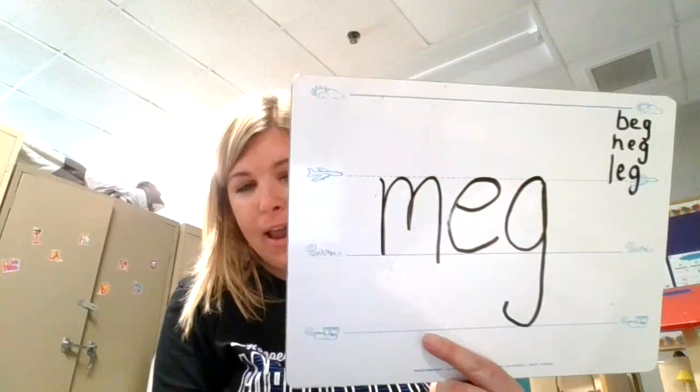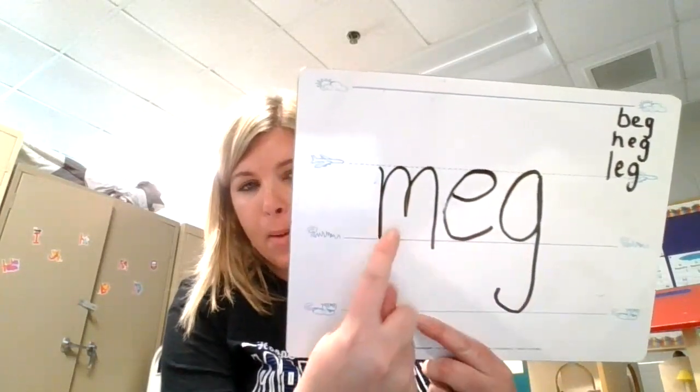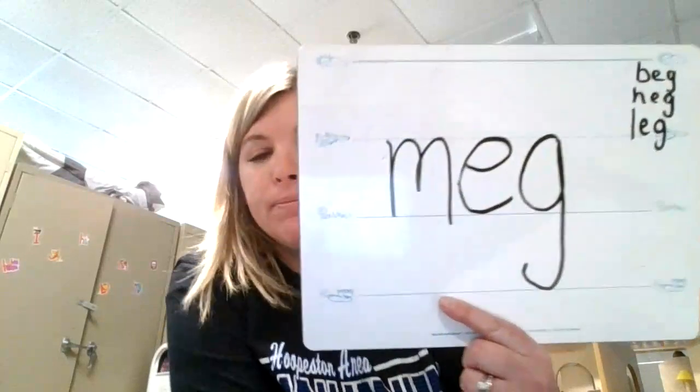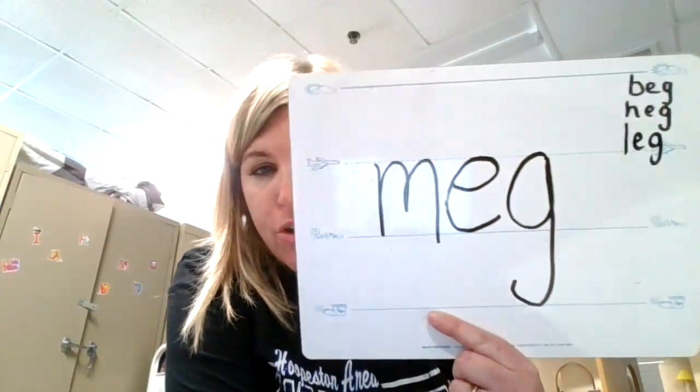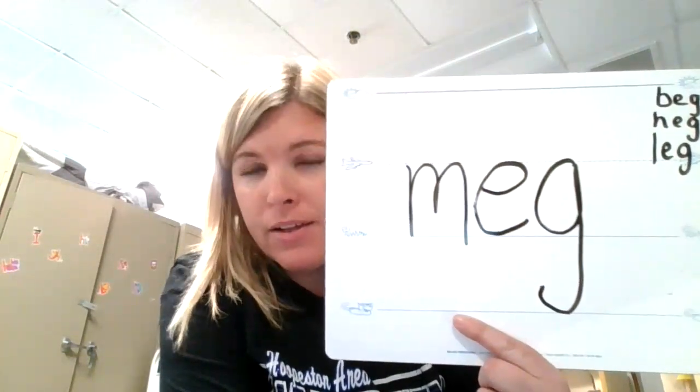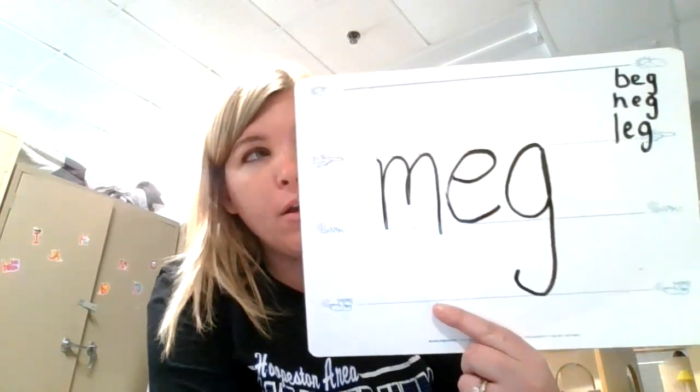The next letter we're going to put in is M. Let's tap that word — mmm-egg, mmm-egg. Meg. Now this is a tricky one. Meg can actually be a person's name. Usually somebody named Megan can sometimes go by Meg. So that could be somebody's name, so that is a real word. You could use it in a sentence if that was someone's name — you could say, is Meg here today? So that is a real word. Okay, we're going to erase M.